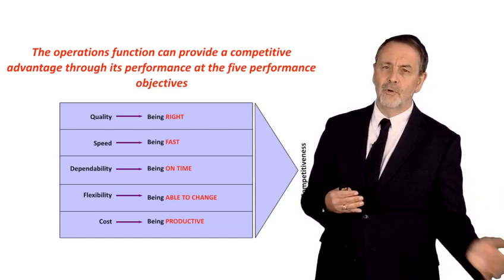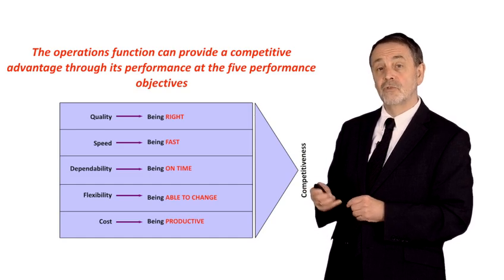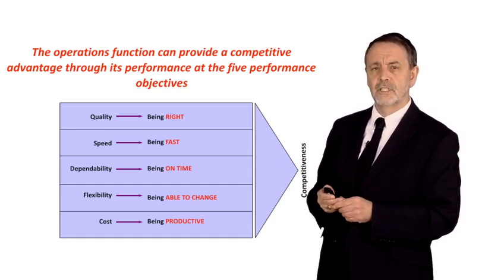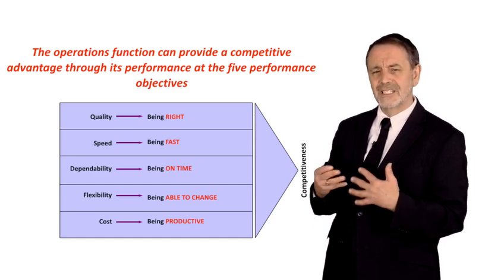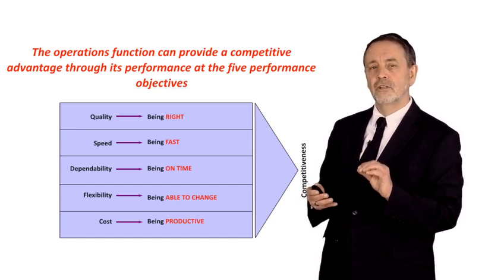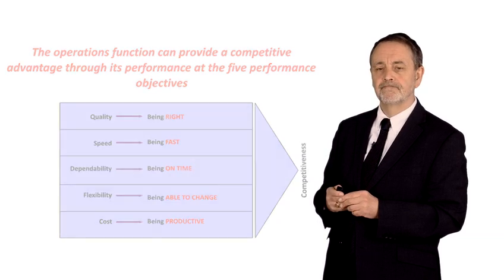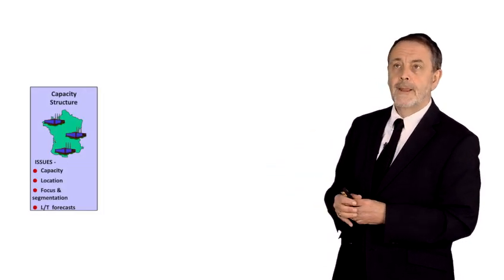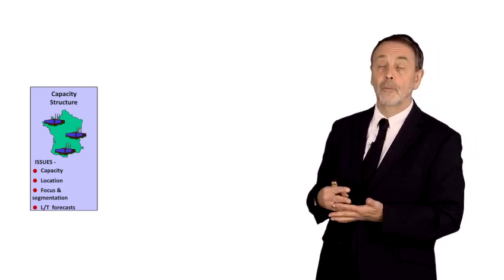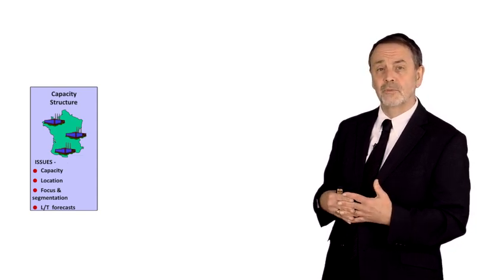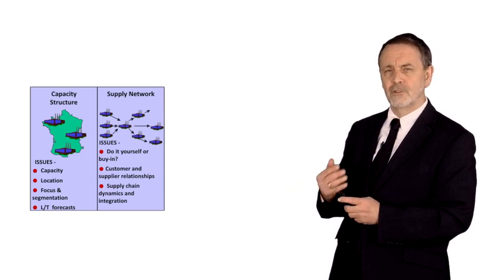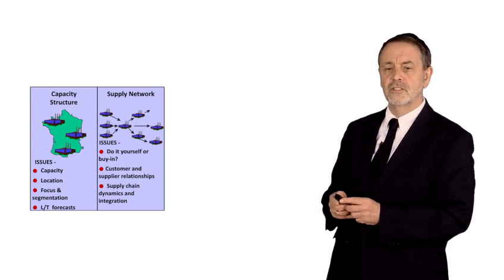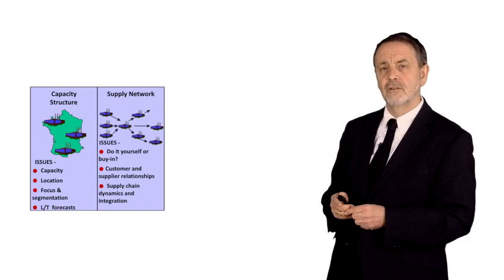First and foremost, how do operations give competitive advantage? Secondly, what do our marketplaces require in terms of these five criteria? When it comes down to how we deliver those capabilities, we have to take decisions. Firstly, about capacity structure — how big, where, and what are we going to do at each facility. Secondly, around supply network — who does what, where, do we do it, do we outsource it, do we have a close collaborative relationship? How do we manage the flow of goods, services, and information through our supply chain?